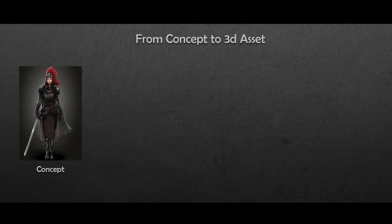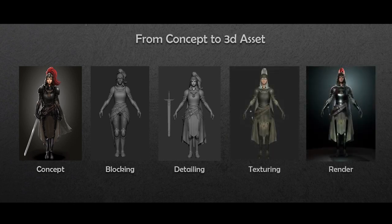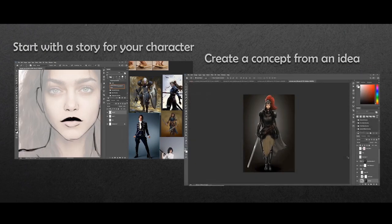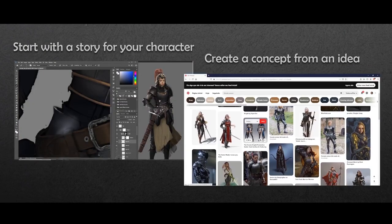In this course, we are going to learn how to materialize an idea for a character, first in 2D, then in 3D, and go all the way to make it an asset that could be used in real-time engines like Unreal or Unity. First, we are going to learn the importance of understanding the story of the character, and how that influences the shape of the concept.